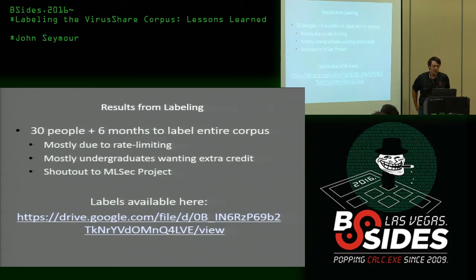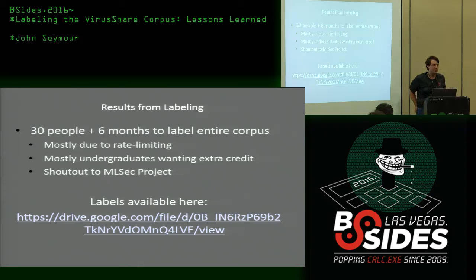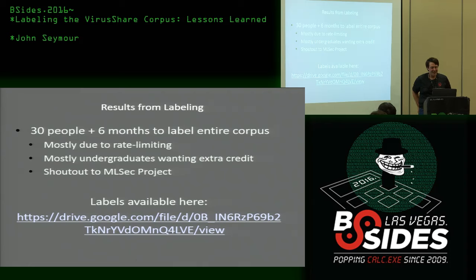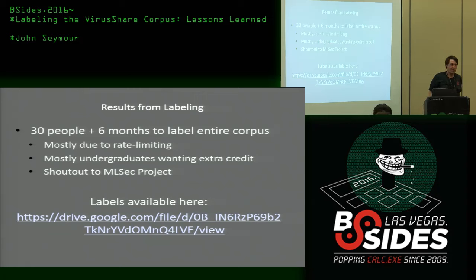Using the public API, it actually took 30 people around six months to label the entire corpus because of rate limiting. We used a lot of undergraduates wanting extra credit from UMBC, which was nice. Also, some people from the MLSec project helped out and beta tested the tools. This is all the labels from chunk zero to 233 — about seven gigabytes compressed of just those JSON lines. I'll release more after DEF CON when I actually get access to Wi-Fi again.